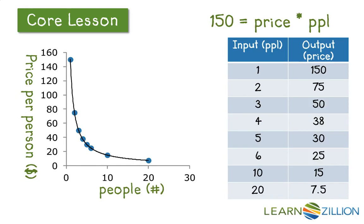It will never ever reach zero though, because at some point every person has to pay. Even if we had a million people, we'd all be paying a very, very small amount. That would be what we call our horizontal asymptote — it will never reach all the way down to zero cost per person. In the vertical, you can see there is a limit because we can't have an input of zero people, since if we had zero people, there'd be no way to pay for that $150.